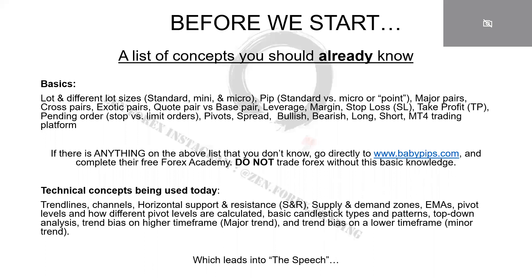You don't have to jump out of the webinar, but go look that stuff up when we're done. Some technical concepts I'm going to be using today are very basic, but I'm going to be utilizing them in a unique way. We're going to talk about trend lines, channels, horizontal support and resistance, horizontal zones which are supply and demand zones, EMAs, the different pivot levels and how they're calculated, basic candlestick types and patterns — basically price action — top-down analysis, trend bias on a higher timeframe giving us our major trend, and trend bias on our lower timeframe giving us our minor trend.